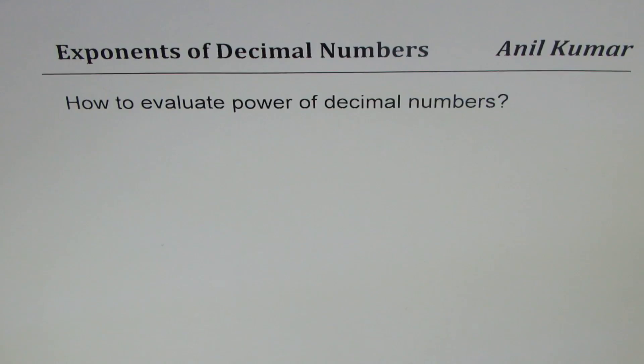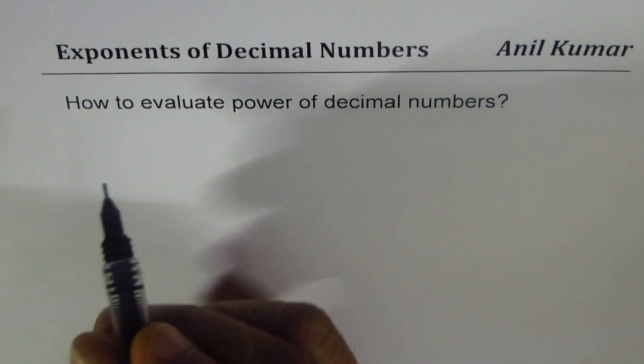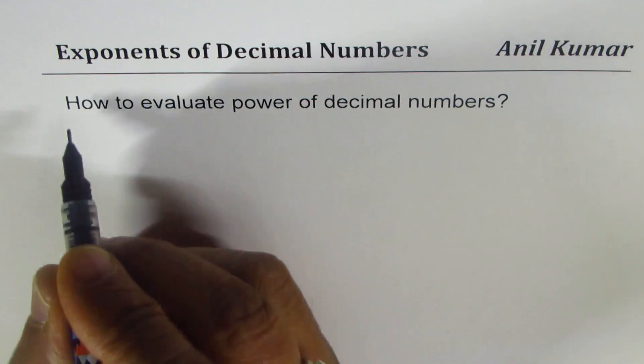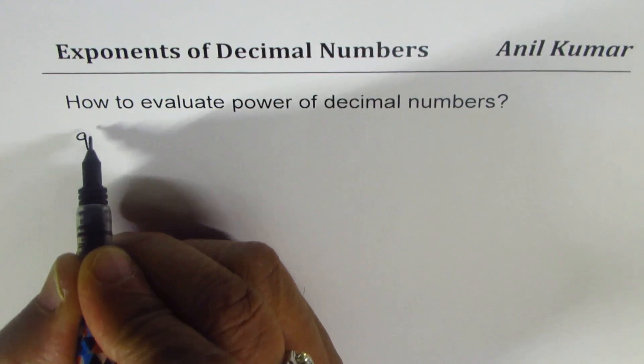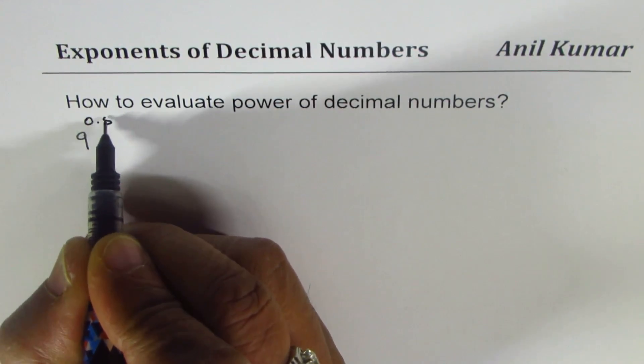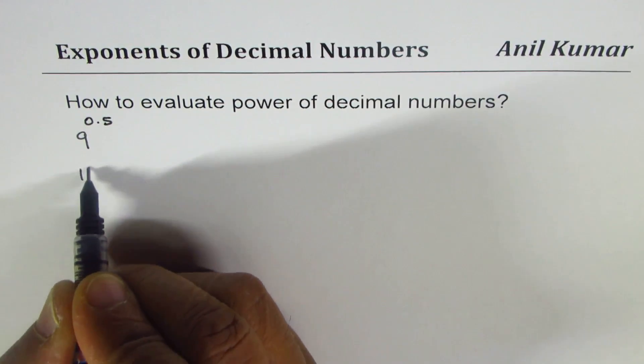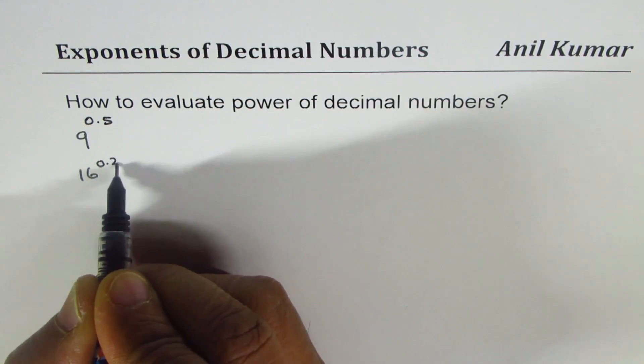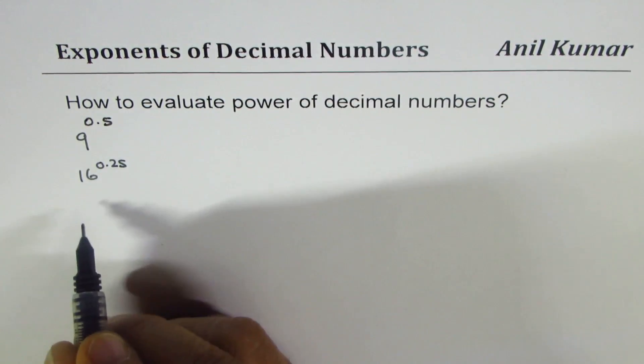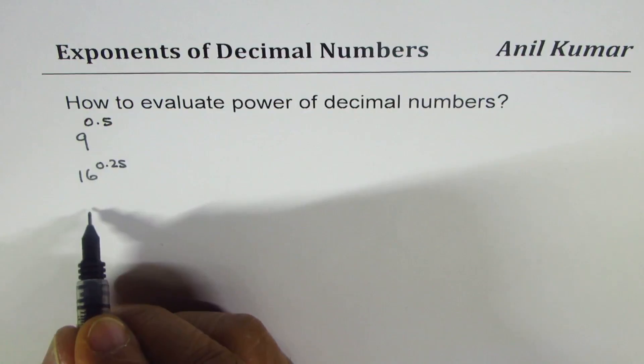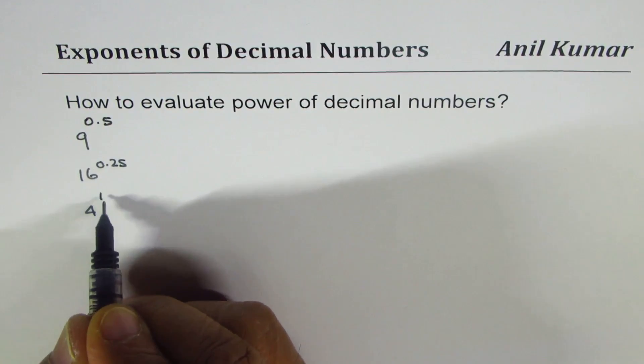So we'll try to evaluate numbers like 9 to the power of 0.5, or 16 to the power of 0.25. We could also have something like 4 to the power of 1.5.